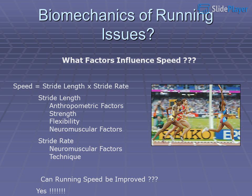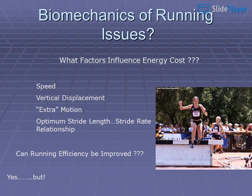What factors influence running speed? Speed equals stride length times stride rate. Stride length is influenced by anthropometric factors, strength, flexibility, and neuromuscular factors. Stride rate is influenced by neuromuscular factors and technique. Running speed can be improved. What factors influence energy cost? Speed, vertical displacement, extra motion, and the optimal stride length to stride rate relationship. Running efficiency can be improved.